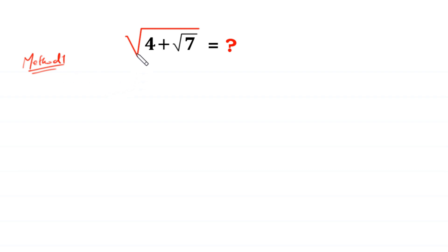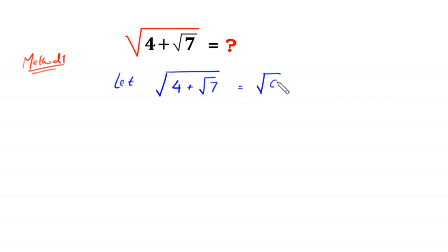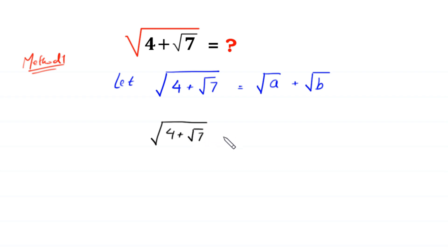In this method, we suppose that this expression — let square root of 4 plus square root of 7 be equal to square root of a plus square root of b. Now we take the square of both sides.